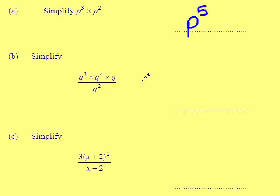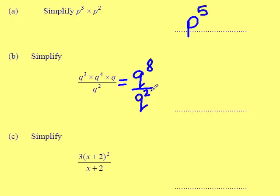Simplify Q cubed times Q to the power of 4 multiplied by Q, all divided by Q squared. Let's simplify the numerator. We get Q to the power of 8 divided by Q to the power of 2. When we divide powers we take them away, so that leaves me with Q to the power of 6, because 8 take away 2 is 6.